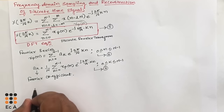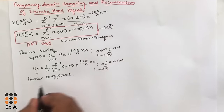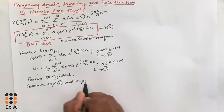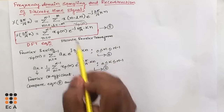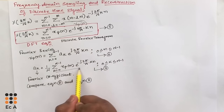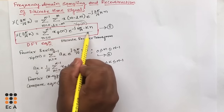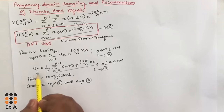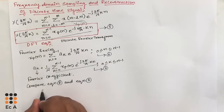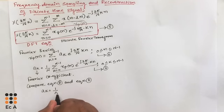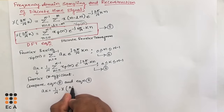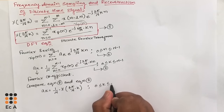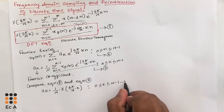Let us compare equation number 7 and equation number 5. Comparing them, the summation term is the same in both. Canceling that common term, we are left with ak equals 1 by N and x of 2 pi by N into k. Therefore ak equals 1 by N into x of 2 pi by N into k, for k ranging from 0 to N minus 1. Call this equation number 8.